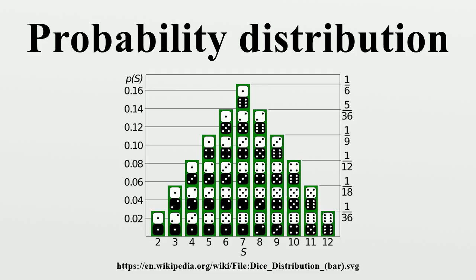Introduction: to define probability distributions for the simplest cases, one needs to distinguish between discrete and continuous random variables. In the discrete case, one can easily assign a probability to each possible value. For example, when throwing a fair die, each of the six values 1 to 6 has the probability 1/6.